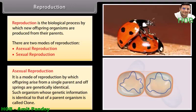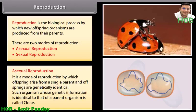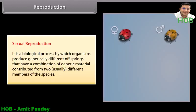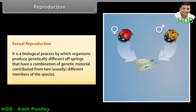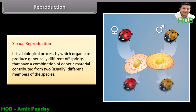Such organisms whose genetic information is identical to that of a parent organism are called clones. Sexual reproduction is the biological process by which organisms produce genetically different offspring that have a combination of genetic material contributed from two usually different members of the species.